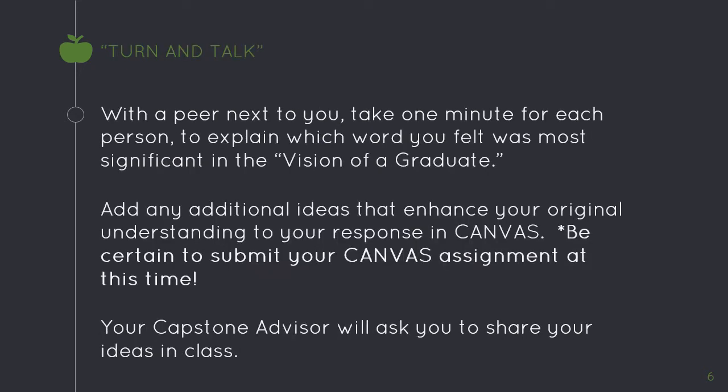Now that you've entered your initial ideas into the Canvas assignment, you will, with a peer next to you, take one minute for each person to explain which word you felt was the most significant in the vision of the graduate. During this conversation, you can add any additional ideas that enhance your original understanding to your response in Canvas. Make certain that by the time you are done with this turn and talk, you submit your Canvas assignment. Afterwards, your capstone advisors — those teachers in the classroom with you — will ask you to share your ideas with the whole class. Take a moment to stop the video and do this now. Your advisors will tell you when to start the video again.